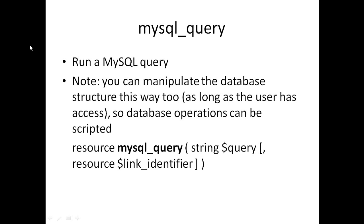Next we have mysql_query. mysql_query allows you to run a MySQL query — pretty straightforward. You can manipulate the database structure this way as long as the user has access, and you can automate database operations. You'll open a connection to a MySQL server, select a database, and run queries against it. This is the way to connect PHP to MySQL from a query perspective. If you're creating tables, you can do that here, as well as inserts, updates, deletes, creates, alters, drops — any type of MySQL query can be passed through mysql_query.